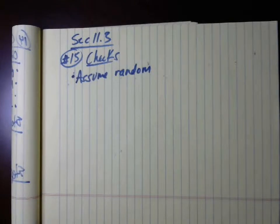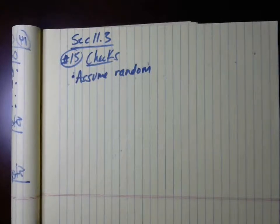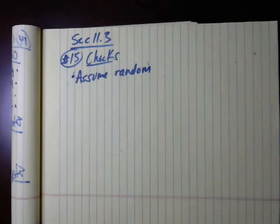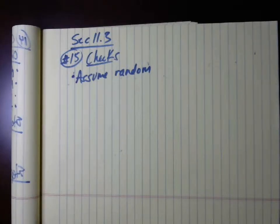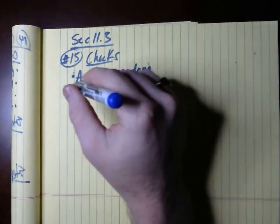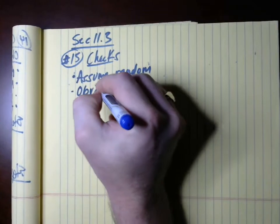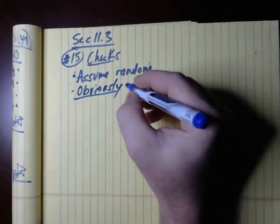The samples are independent. Since we're doing independent samples in section 11.3 with two means, they have to be independent of each other. In the previous section, the cities were what made the samples dependent - matched pairs. Here we're just choosing rooms that are carpeted and rooms that are uncarpeted. There's no dependence, no natural pairing between one carpeted room value and one uncarpeted room value. They're just picking eight carpeted and eight uncarpeted rooms.